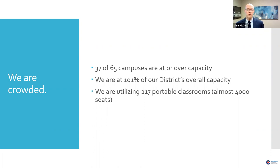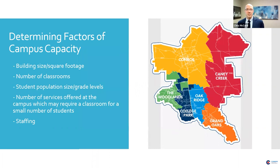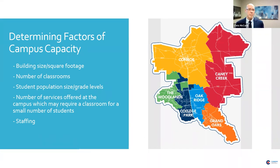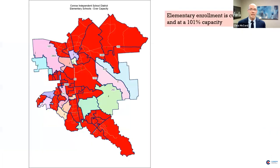There are quite a few portables in the Grand Oaks feeder — you're probably familiar with them. What goes into determining capacity? Building size and total square footage, number of classrooms available for instruction, student population size, grade levels — since there are different ratios for different grade levels — special services such as special education, bilingual, ESL, and pre-K, and staffing. All those weigh in to establishing capacity for a campus.